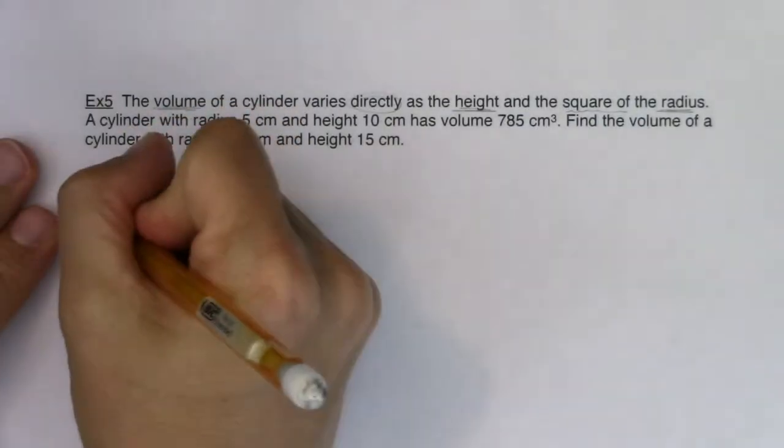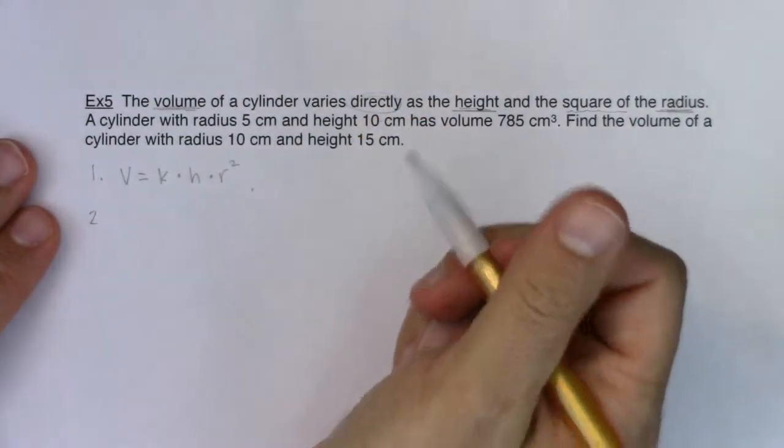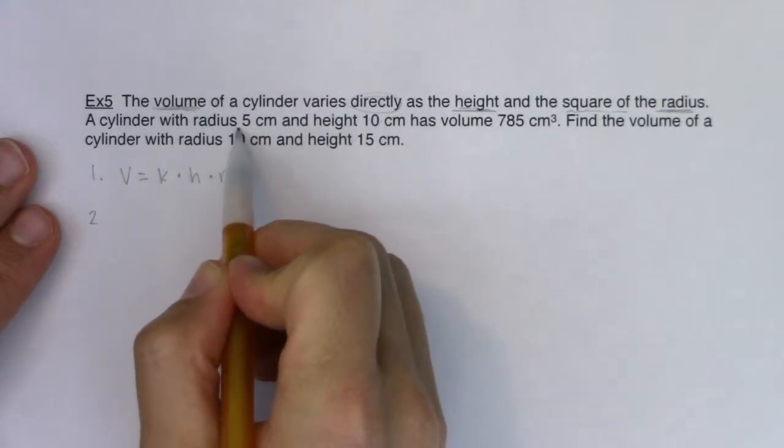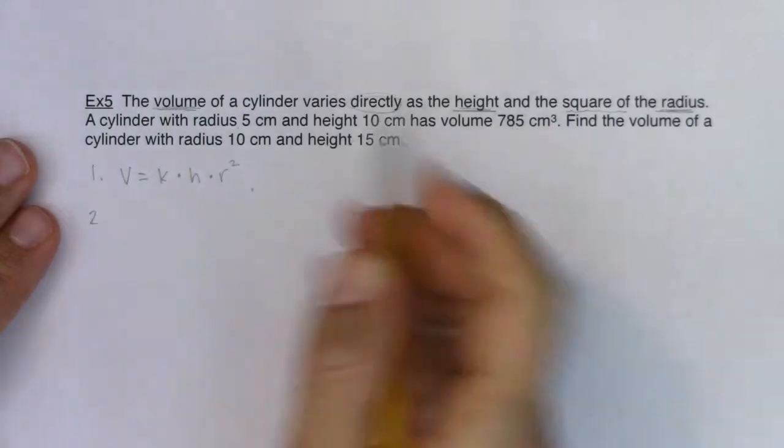Fantastic. Step two says substitute given values of a variable into your equation. Here's my complete ordered triple. When the radius is 5, the height is 10, the volume is 785. So let me plug that in. I'm going to have 785 equal to K times the height, which was 10, and the radius was 5.